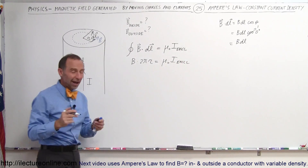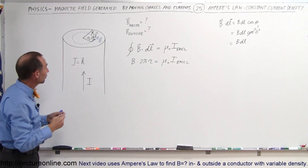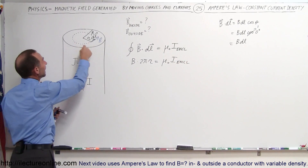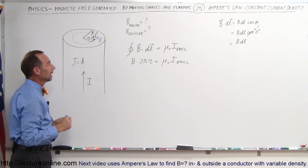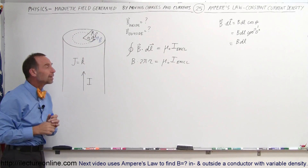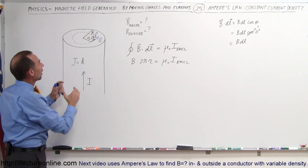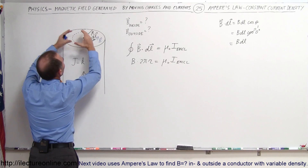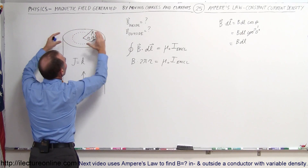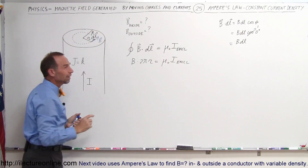So the line integral is simply B times DL all the way around the loop. We can say that equals B times 2πr, which equals μ₀ times I enclosed. Now we still have to find the current enclosed inside this loop.